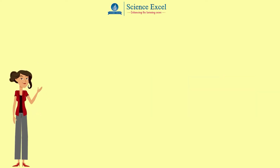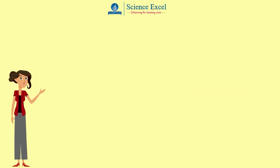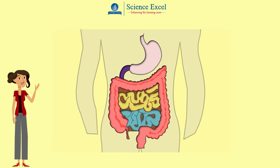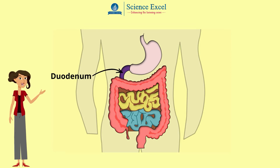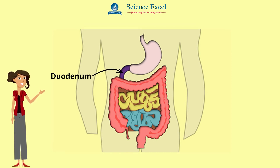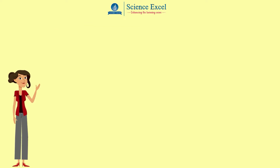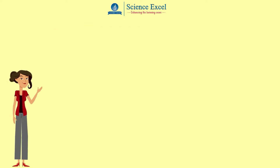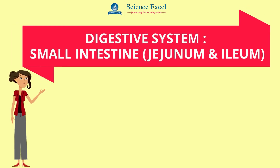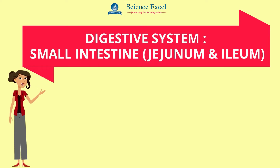In our previous tutorial, we learned how food is broken down in the duodenum. This tutorial takes us further into the journey where this food passes to the next part of the small intestine called the jejunum, and onwards to the third part, the ileum.